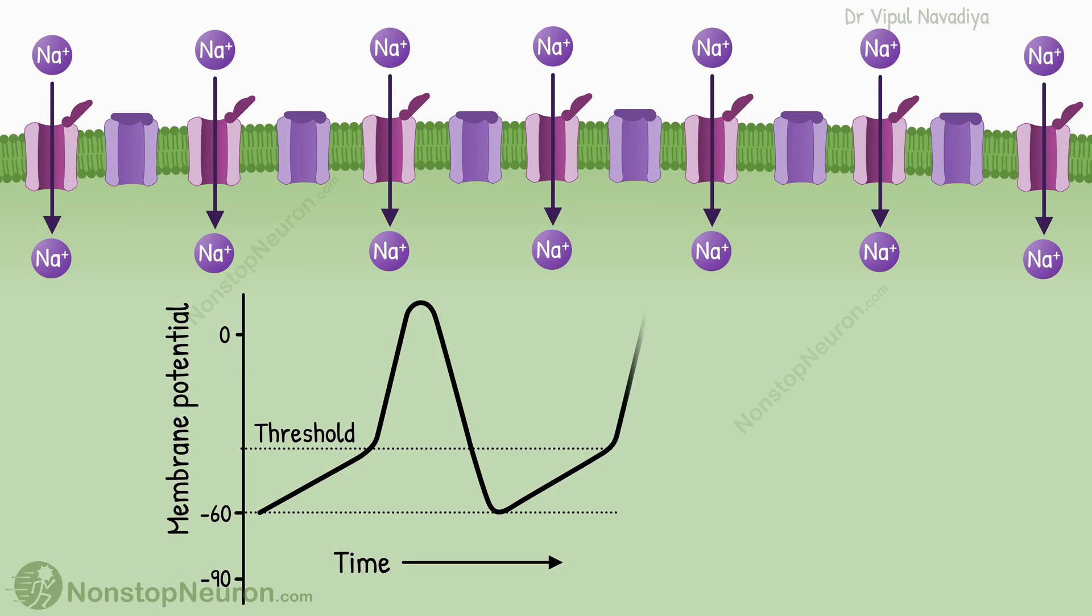And upon reaching the threshold, the next action potential is produced. This way, the cell keeps generating its own action potential at regular intervals.